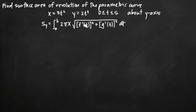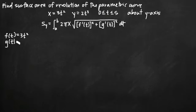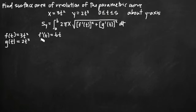Before we start working with this formula, we're going to need derivatives f'(t) and g'(t). I like to define f(t) equal to x, which is 3t squared, and g(t) equal to y, which is 2t cubed. Taking derivatives using the power rule: f'(t) equals 6t, and g'(t) equals 6t squared.